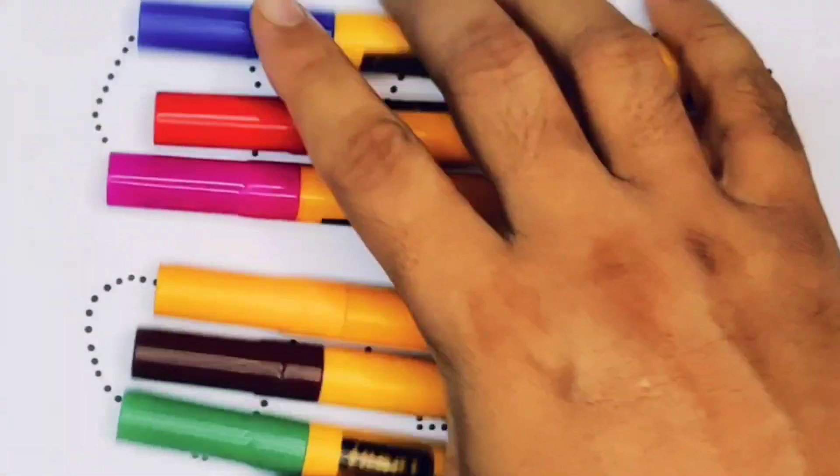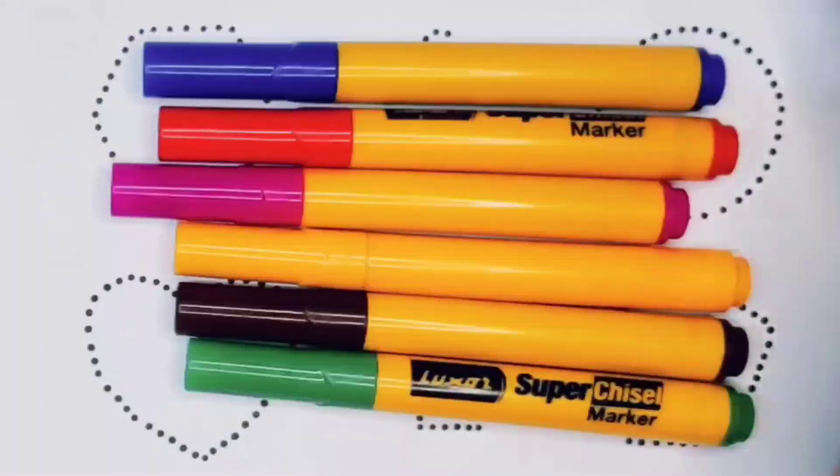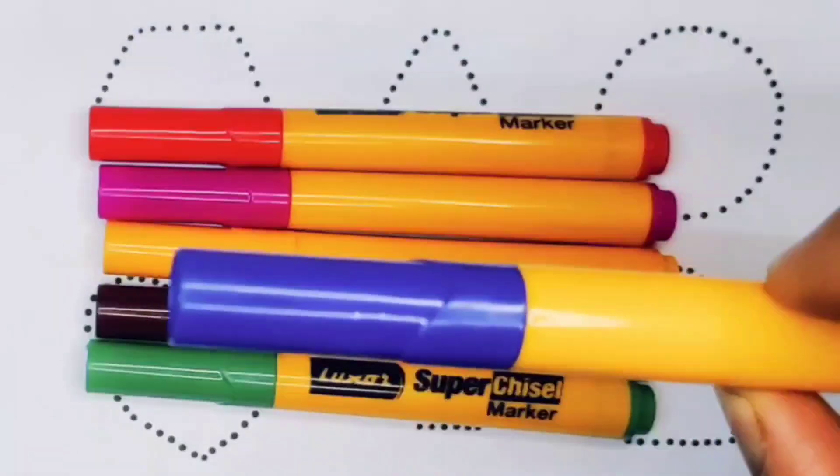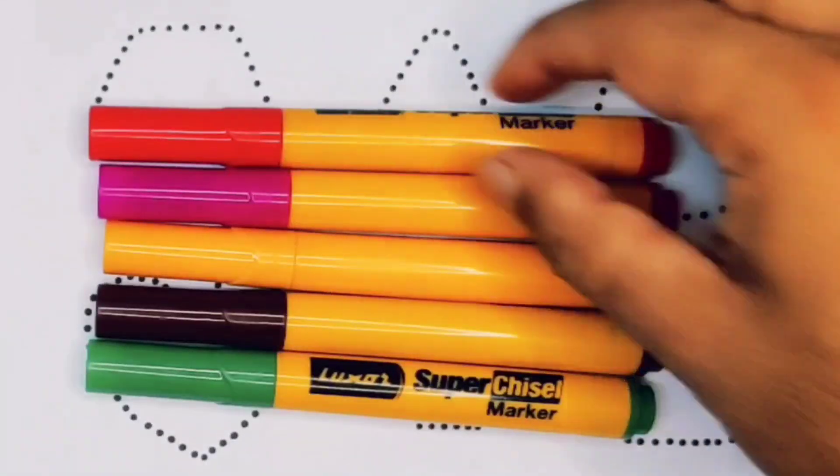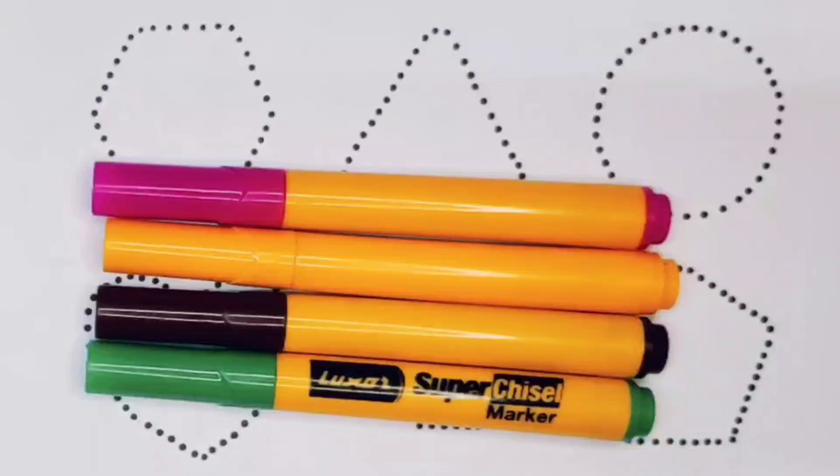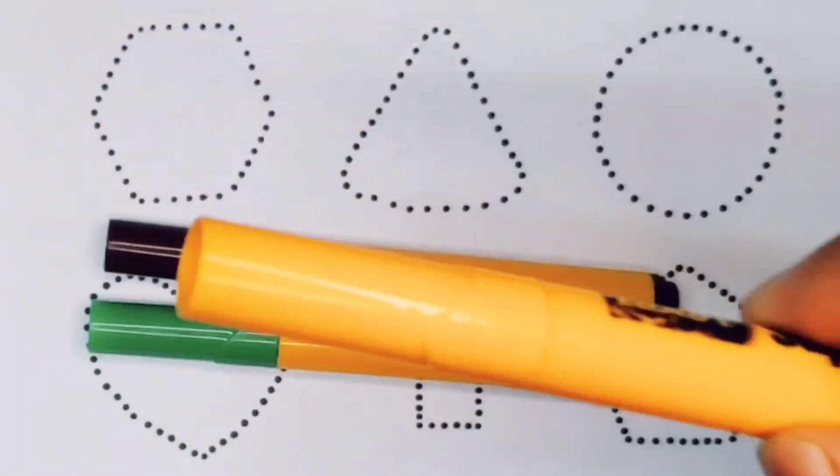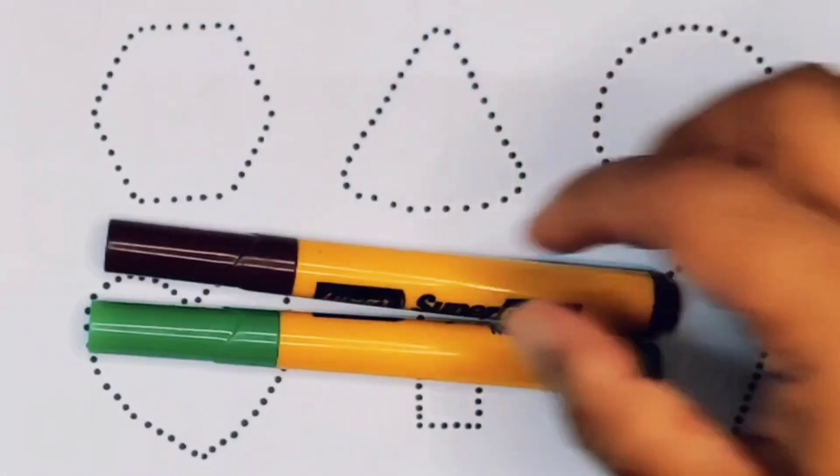Hello kids, welcome to my new video. First we're going to know the colors name: blue color, red color, pink color, orange color, chocolate color.